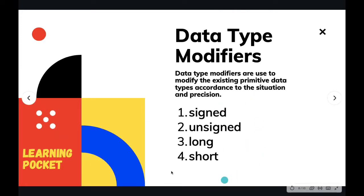We are going to use these four things to modify them. These are the data type modifiers: signed, unsigned, long, and short. You need not confuse that long is also a data type modifier and it is also itself a data type. Yes, it is.